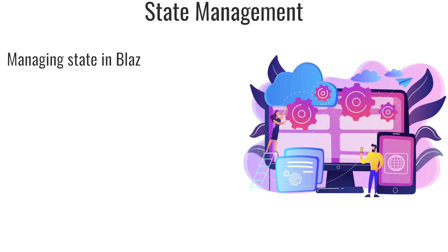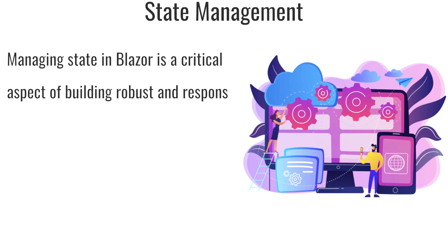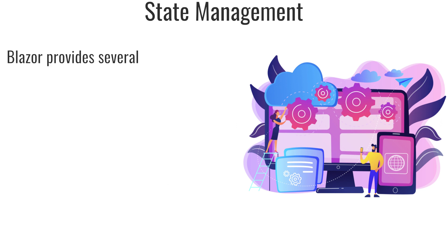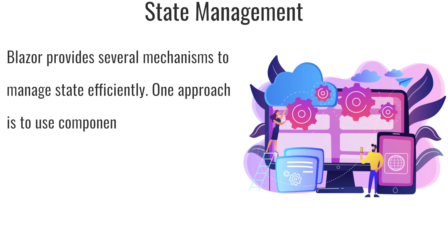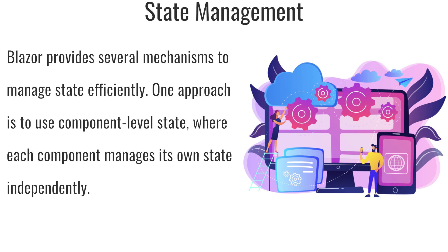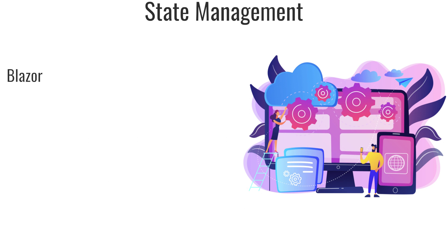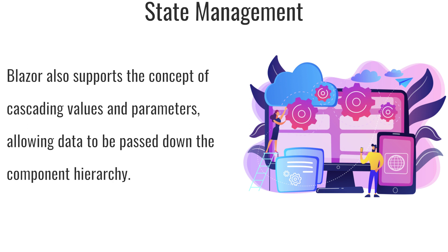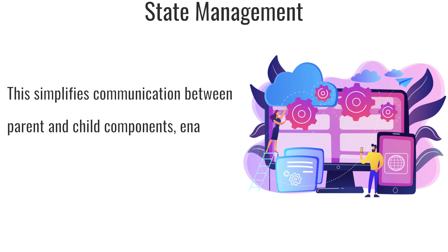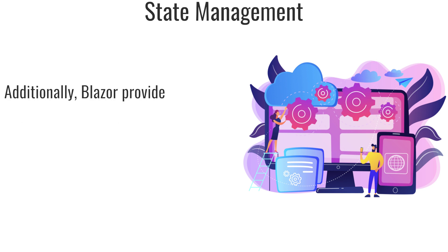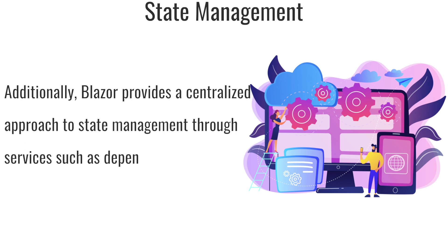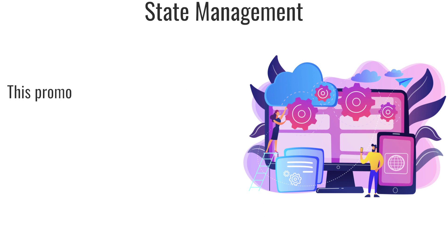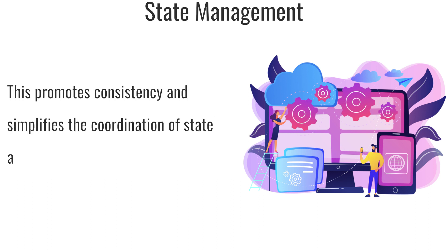Managing state in Blazor: Managing state is a critical aspect of building robust and responsive web applications. State refers to the data that determines the behavior and appearance of the application. Blazor provides several mechanisms to manage state efficiently. One approach is component-level state, where each component manages its own state independently, ensuring encapsulation and reusability. Blazor also supports cascading values and parameters, allowing data to be passed down the component hierarchy, simplifying communication between parent and child components. Additionally, Blazor provides a centralized approach to state management through services such as dependency injection, allowing developers to create shared instances that store and manage application-wide state.